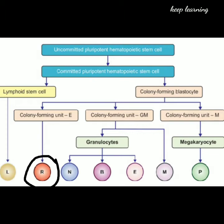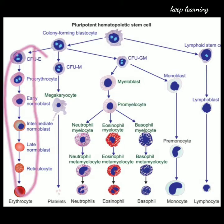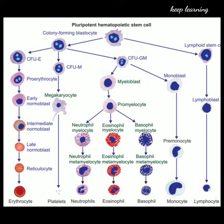Let's see the stages of formation of RBC. From the colony forming units, the proerythroblast is produced. This is the first stage of RBC, which is the largest in size, has a nucleus, and no hemoglobin. The next stage is the early normoblast, which is smaller compared to the proerythroblast.